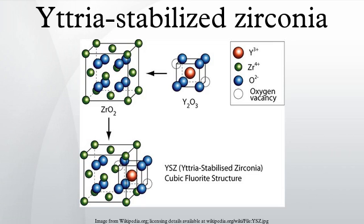Some of the abbreviations used in conjunction with stabilized zirconias are as follows: PSZ — partially stabilized zirconia (ZrO2); TZP — tetragonal zirconia polycrystal; 4YSZ — with 4 mol% Y2O3, partially stabilized zirconia, yttria stabilized zirconia.